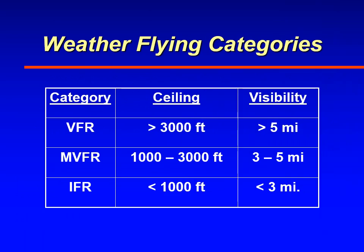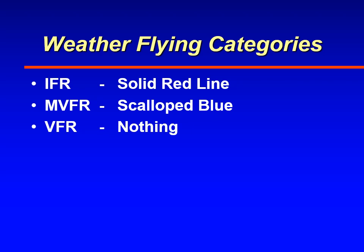The chart shows three different weather flying categories: VFR, MVFR, and IFR. VFR means the ceiling is greater than 3,000 feet and visibility is greater than 5 miles. MVFR means the ceiling is between 1,000 and 3,000 feet and/or visibility is between 3 and 5 miles. IFR means the ceiling is less than 1,000 feet and/or visibility is less than 3 miles. Areas of IFR weather are enclosed in a red solid line, MVFR areas are enclosed in a scalloped blue line, and VFR is everything else.